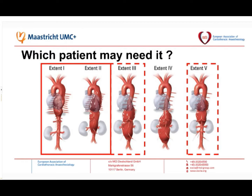The first take-home message I want to give you is: talk to each other. What we are doing is talking to the surgeons and having discussions about patients and indications for CSF drainage. Besides all the evidence, the main point is that we should be clear with the surgeons about which patients may benefit from CSF drainage and which would not. There is no evidence to place a CSF drain preoperatively in patients with a class 4 aneurysm, because normally this should be sub-diaphragmal.